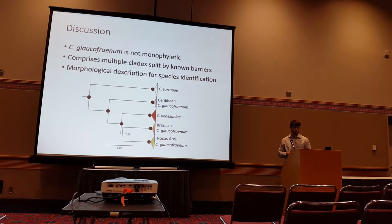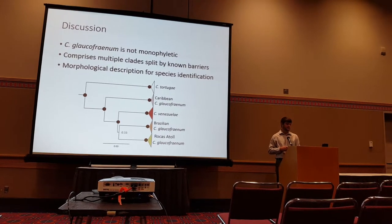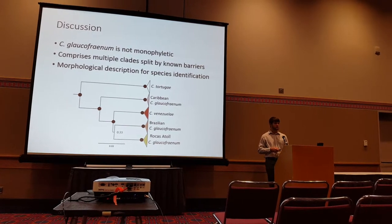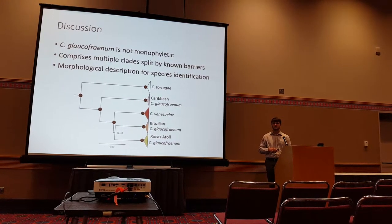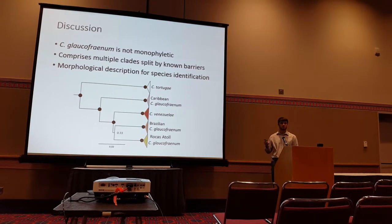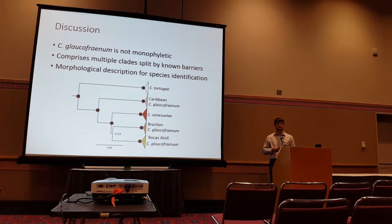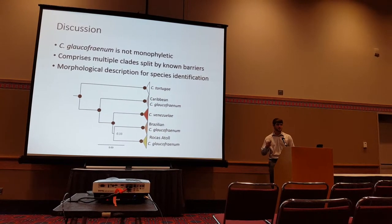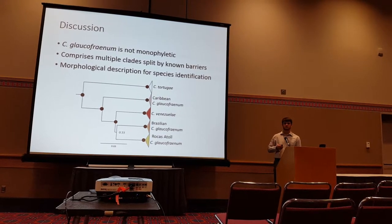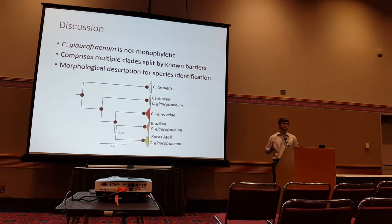What we found is that Coriopopterus vacafranum is not monophyletic — it comprises multiple clades that are split by not only the Amazon barrier, but also the isolated oceanic islands. I'm waiting for some morphological description from collaborators, and after listening to the species-delimitation debates at this conference, I'd like to wait to definitively describe these as new species.